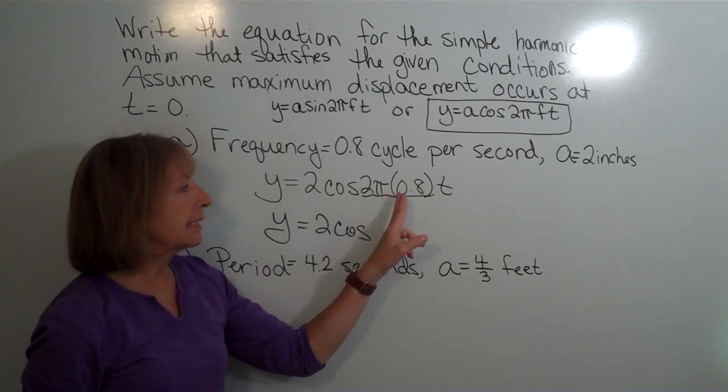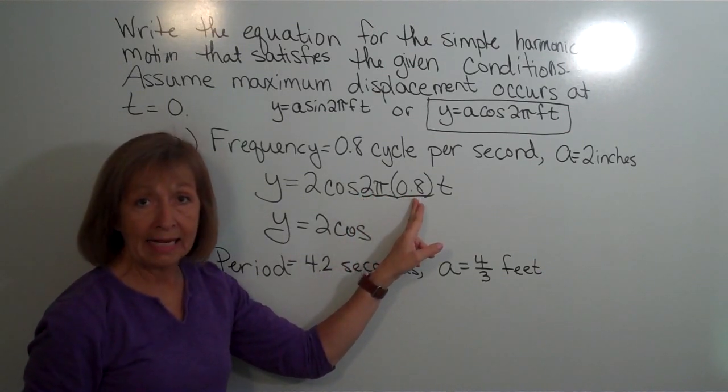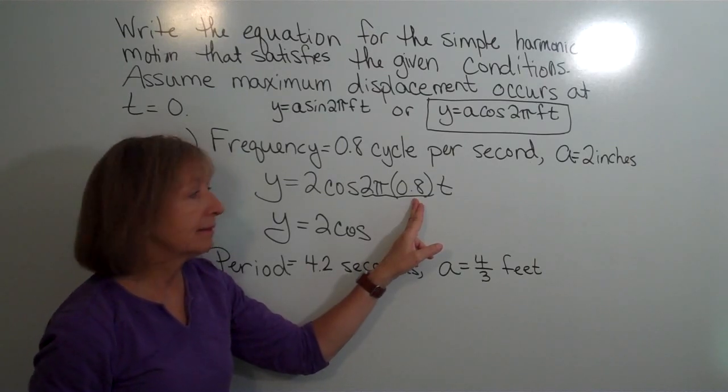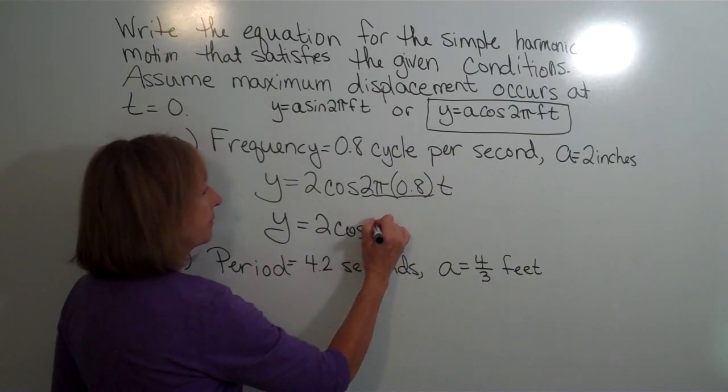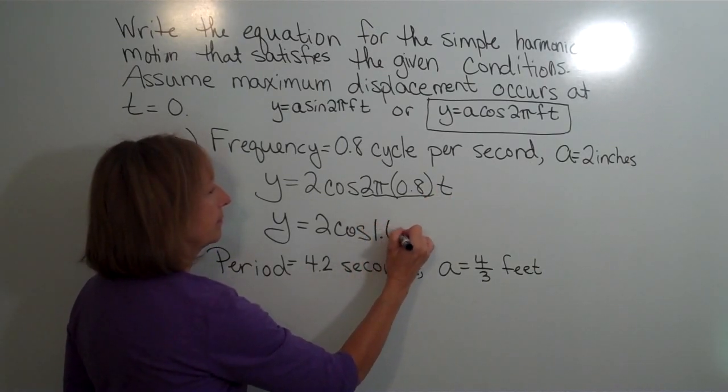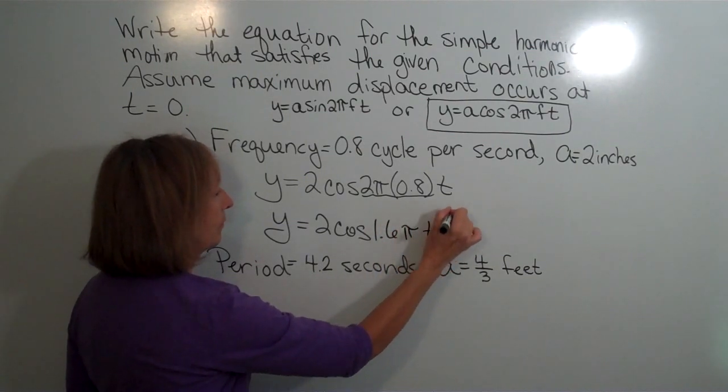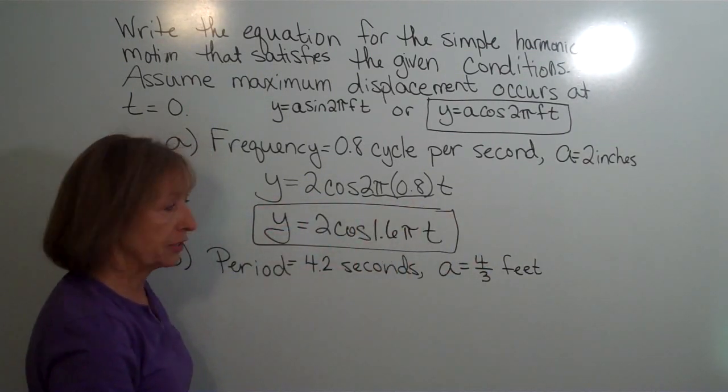well, 2π times 0.8 is 1.6π, and then t. And that gives us our equation.